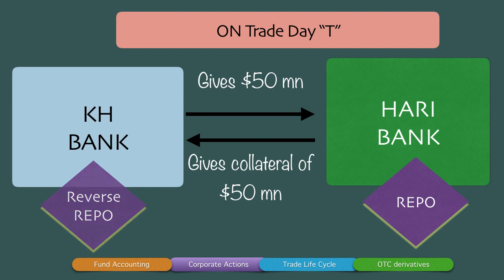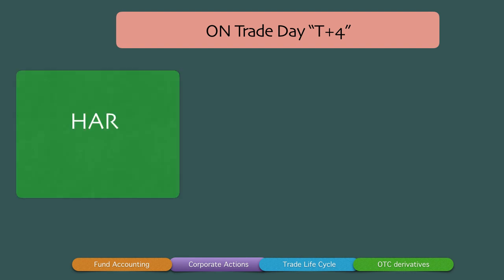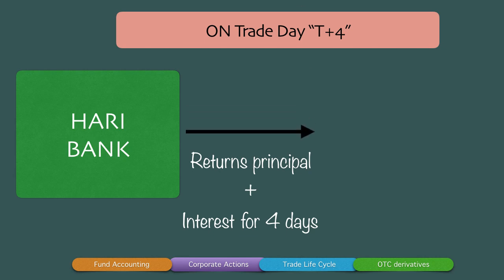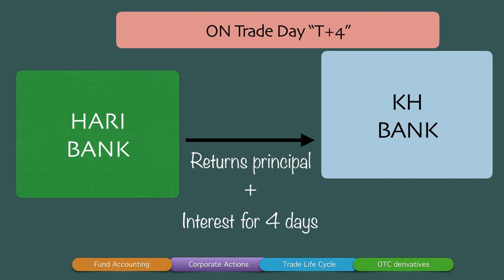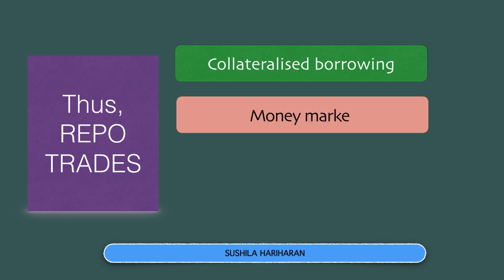On trade day T+4, for which the collateral has been provided, Hurry Bank — which has taken the money from KH Bank — must repay the principal and the interest for the four days. KH Bank, which has lent the money on the basis of the collateral, will return the collateral back to Hurry Bank. So on the settlement date, collateral is returned and principal plus interest is returned by the borrower to the lender.